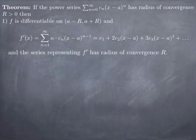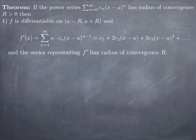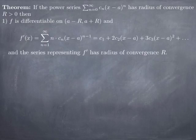Turning directly to the result: if you have a power series cₙ(x−a)ⁿ centered at a with a positive radius of convergence R, and we define f(x) to be the sum of the series on the open interval (a−R, a+R), then f is differentiable on that open interval. Its derivative is given by the sum from n=1 to infinity of n·cₙ·(x−a)^(n−1). In other words, we start with c₁, then 2c₂(x−a), then 3c₃(x−a)², and so on.